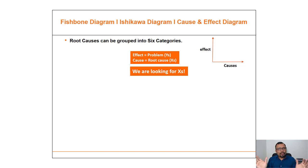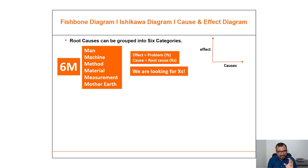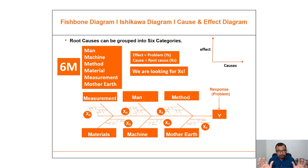Root causes can be grouped into six categories — the six M's: Man, Machine, Method, Material, Measurement, and Mother Earth. Based on your 6M analysis and the given effect, you can draw a fishbone diagram. I am going to discuss all these parameters in detail in the coming slides.